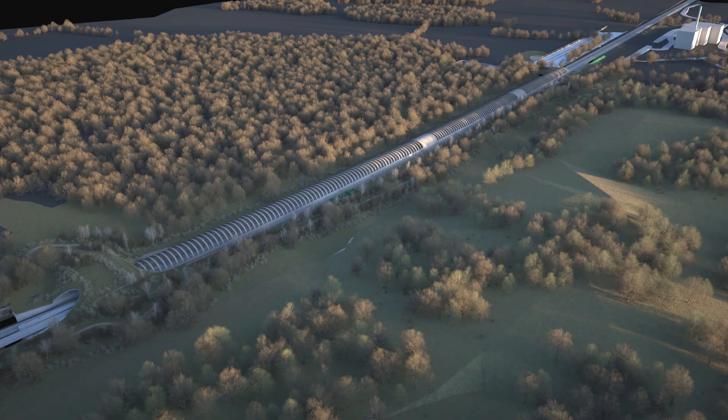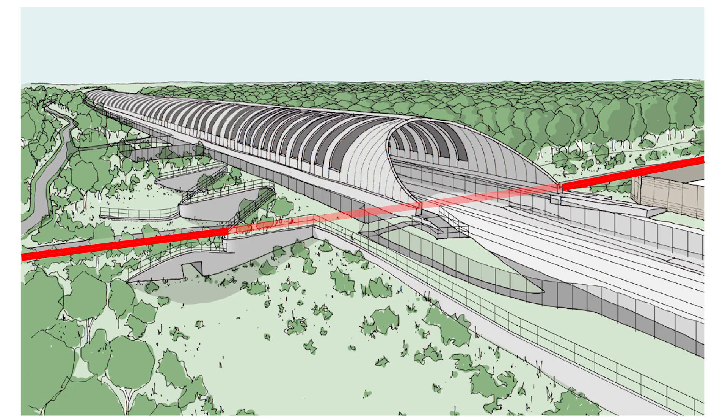We now come to CAG2 Underbridge and the Sheep House Wood Bat Mitigation Structure, otherwise known in the media as the Bat Shed. The underbridge actually forms part of the main structure. The footpath that connects with Three Points Lane, which is marked here in red, will pass through this underbridge.